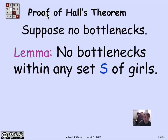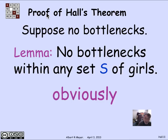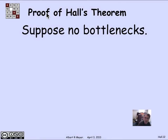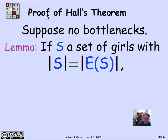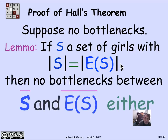Let's begin by supposing there are no bottlenecks in some bipartite graph H. In particular, if you restrict yourself to some set S of girls, no subset of that set S will have a bottleneck — a bottleneck within S would be a bottleneck within the whole graph. What's less trivial is the following: suppose you have a set of girls where the number of boys compatible with that set is exactly the same as the number of girls — that is, |S| = |E(S)|. In that case, we can argue there are no bottlenecks within the complement of S and the complement of E(S) either.